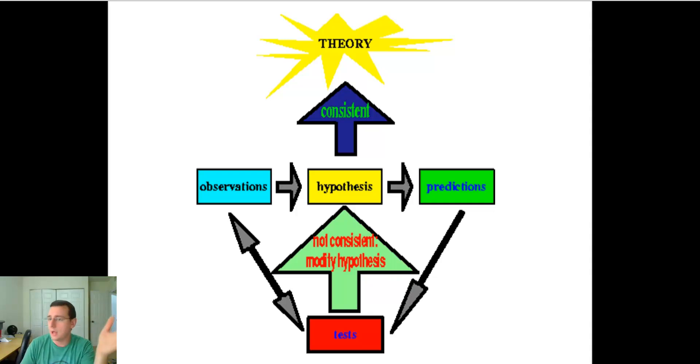So a theory in science is not something that you think, oh, I think this is what it is. That's more like a hypothesis. When we use the word theory in society, we use it like, oh, I have a theory about this. I think this is how it works. Well, if you think that's how it works, then that's more like a hypothesis. A theory, it's not what you think it's like how it works. It's how you know it works based on all the evidence that we've already collected.